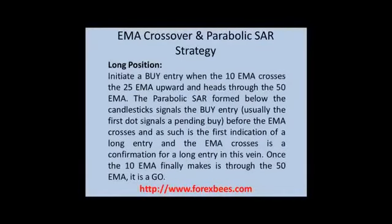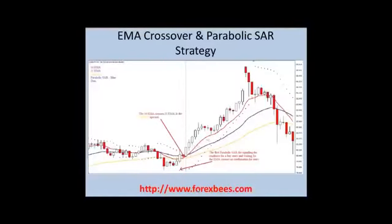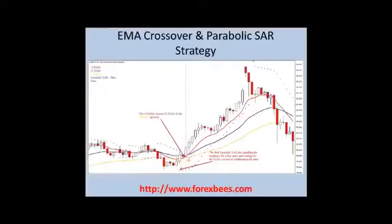Once the 10 EMA finally makes it through the 50 EMA, this is a go. If you see here, the red line is the 10 EMA, the blue line is the 25 EMA, and the yellow line is the 50 EMA. In this picture, you can see the red 10 EMA crossing the 25 EMA, and it is already above the yellow 50 EMA. Once it crosses, this is a buy signal, but you have to make sure that the Parabolic SAR dots are below the candlesticks.